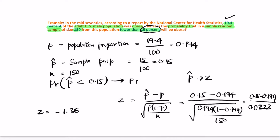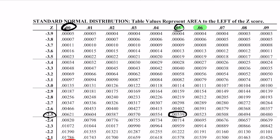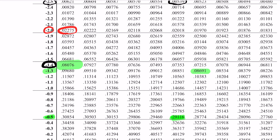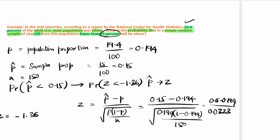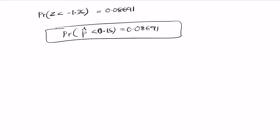We need P(z < -1.36). Using the standard normal distribution table, we look up negative 1.36. The matching value is 0.0869. Therefore, the probability of p-hat less than 0.15 is 0.0869. This is how you solve this problem.